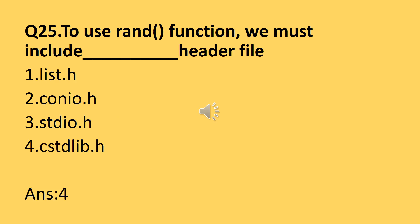Question number twenty-five: to use the random function, which header file must be included in the C++ program? The answer is cstdlib.h. The random function is used to generate random numbers in a C++ program, and it is present in the cstdlib.h header file. So if you want to use the random function, you must include cstdlib.h in your program.